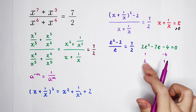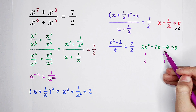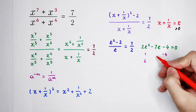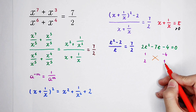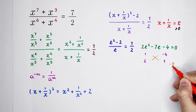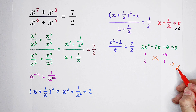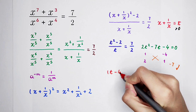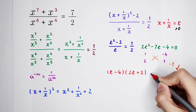Factorize using the cross rule: 1 times 2 is 2, and negative 4 can be factorized as negative 4 times 1. By cross multiplying and adding: 1 times 1 is 1, minus 2 times 4 gives negative 7 — which matches the coefficient of t. So the factorization is correct: t minus 4, times 2t plus 1, equals 0.